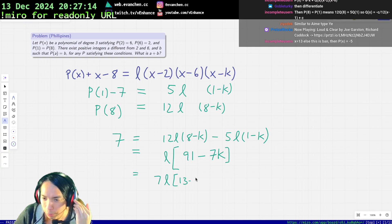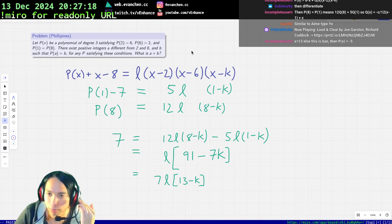So it should be x equals 13, right? And then we're going to plug in 13. P(13) + 5 is equal to whatever it is.